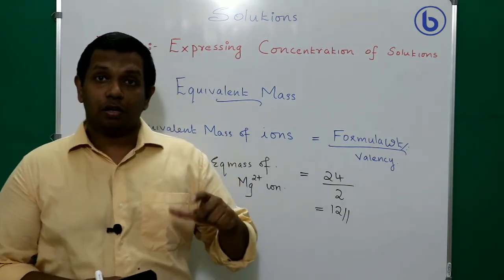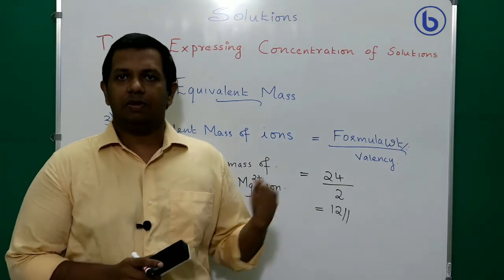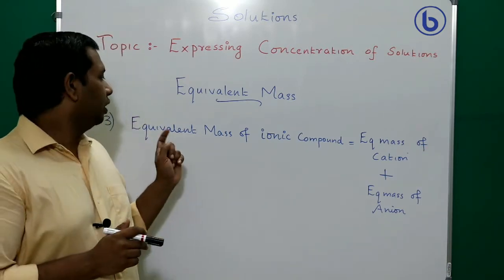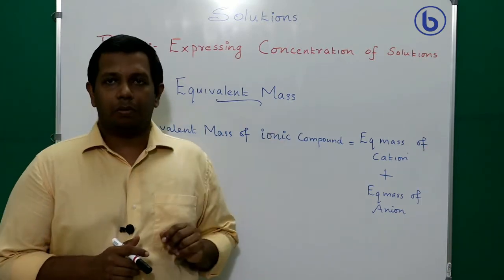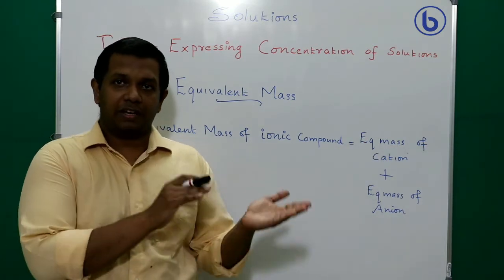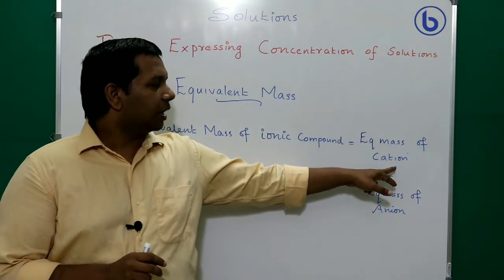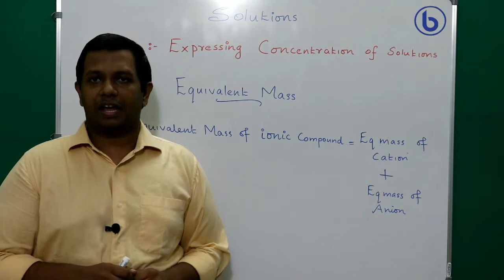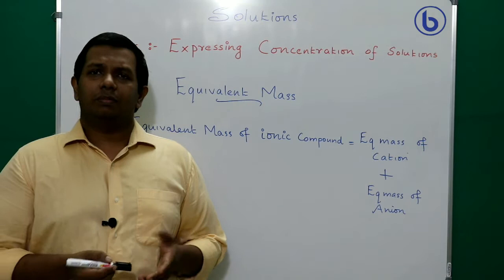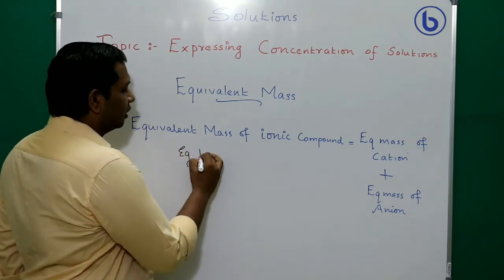Next: equivalent mass of an ionic compound. An ionic compound is made up of a cation and an anion. The equivalent mass of the ionic compound = equivalent mass of the cation + equivalent mass of the anion. We will use H₂SO₄ as an example since it is also an ionic compound.